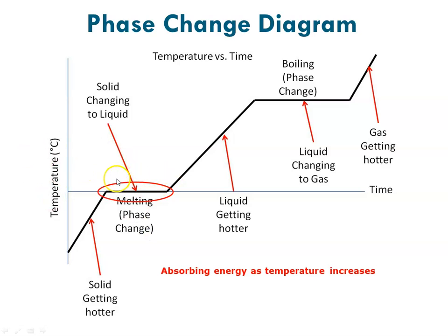At its melting point, you'll notice the temperature remains constant. You might ask yourself why that's taking place. What's happening is energy is still being absorbed, but instead of increasing the temperature, the energy is causing the phase change. In order for water, for instance, to go from being ice to being a liquid, it has to have enough kinetic energy to break apart from the other water molecules.